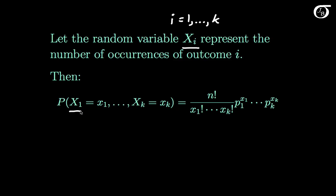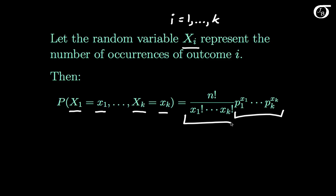The probability that random variable x1 takes on the value x1, and all the way up through random variable xk taking on the value xk, is equal to what we have here. On this side we have p1, the probability of outcome 1 on any one individual trial, raised to the number of times outcome 1 happens, all the way up to the probability of outcome k occurring on any one individual trial raised to the number of times we need outcome k to occur. This gives the probability of any one specific ordering of x1 occurrences of outcome 1 through xk occurrences of outcome k. Multiplied by the number of possible orderings, these together give us the overall probability.